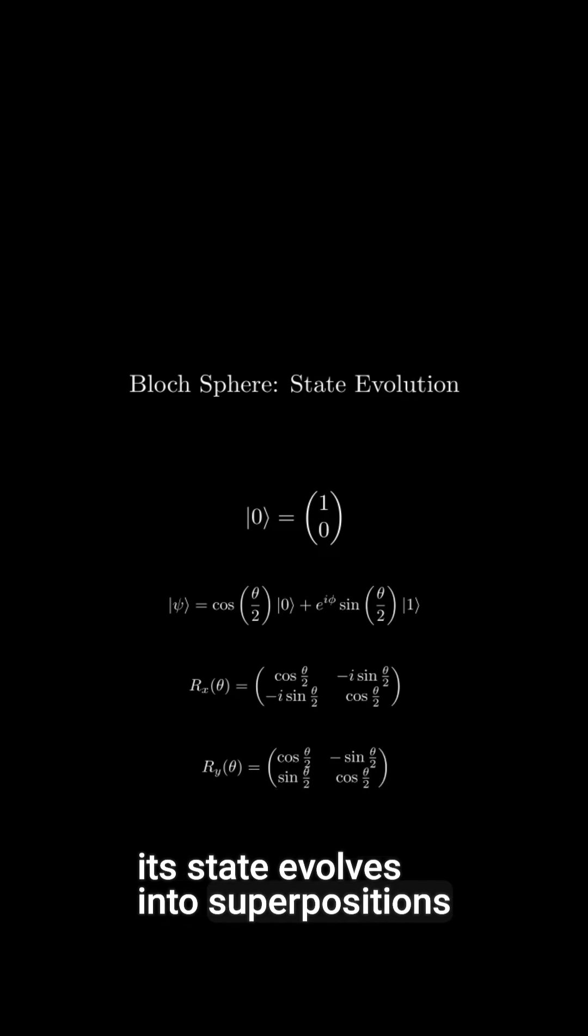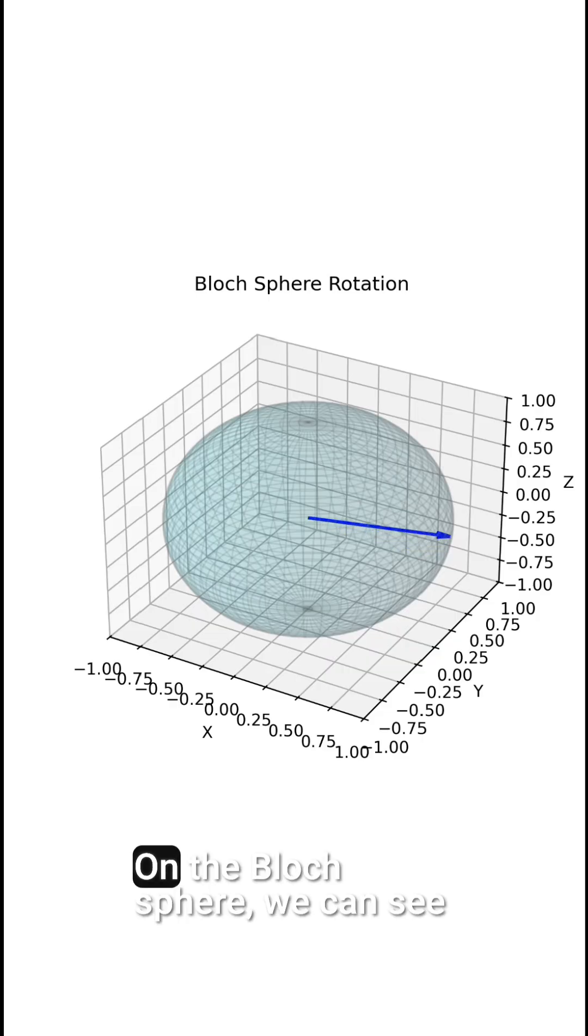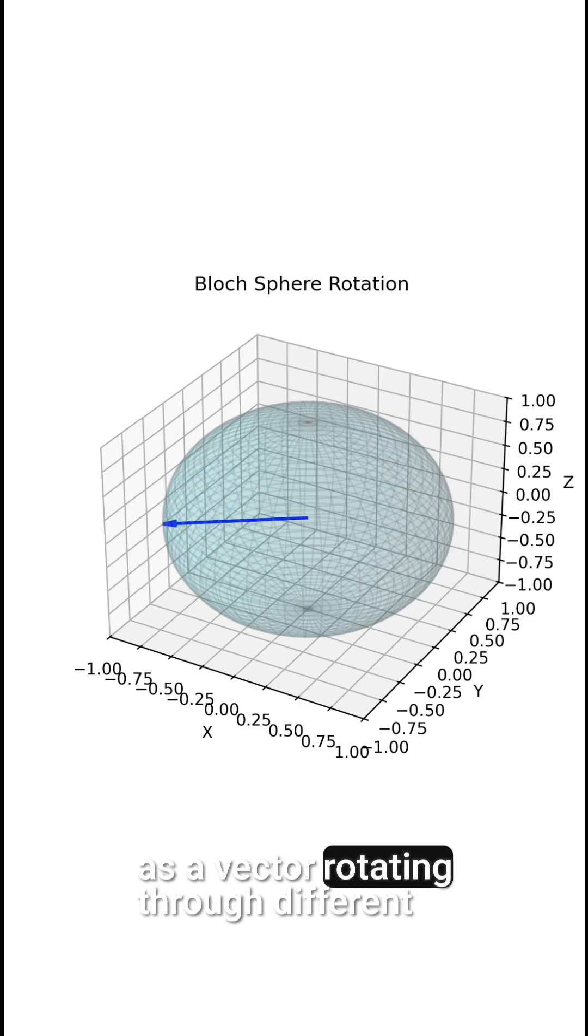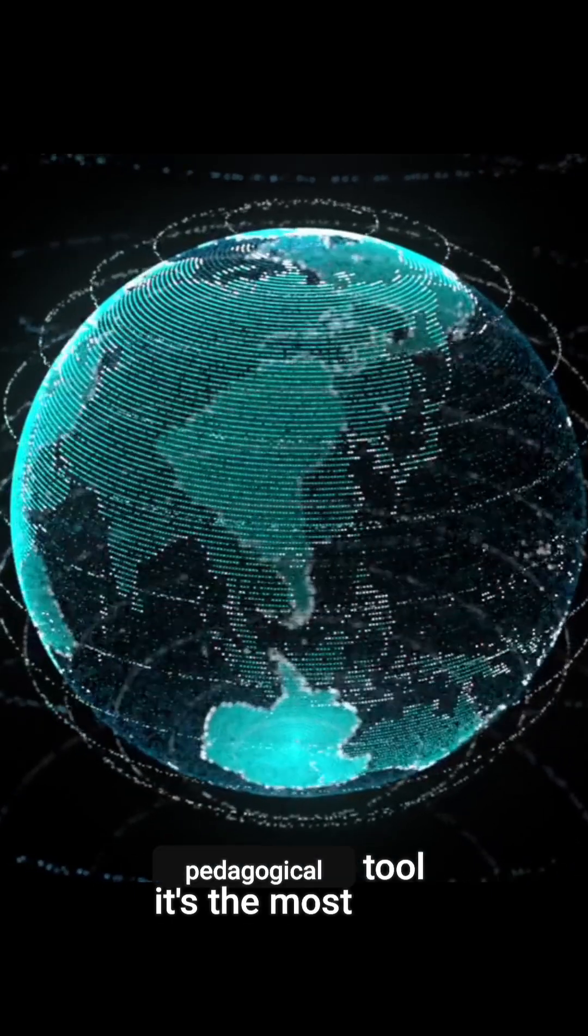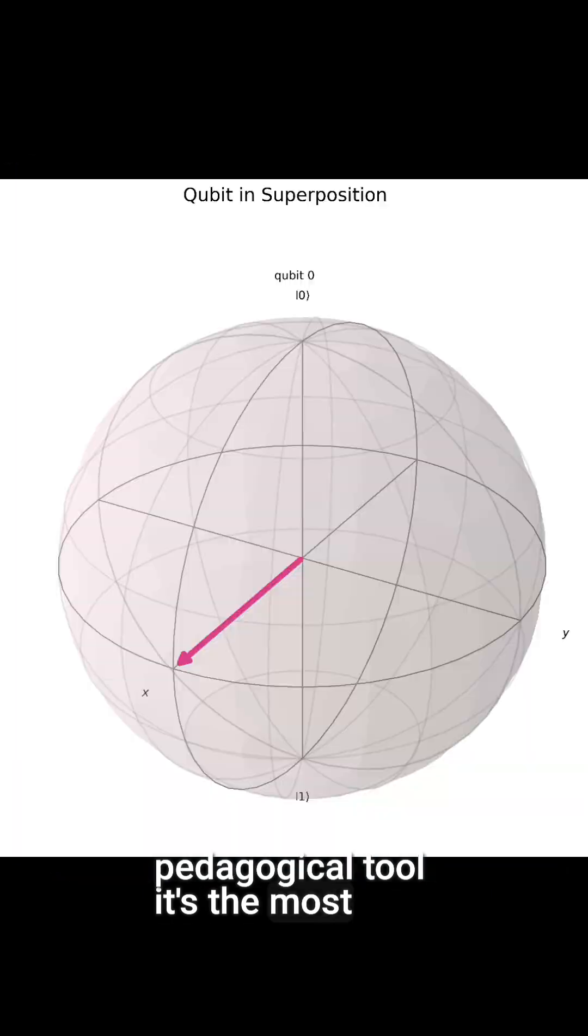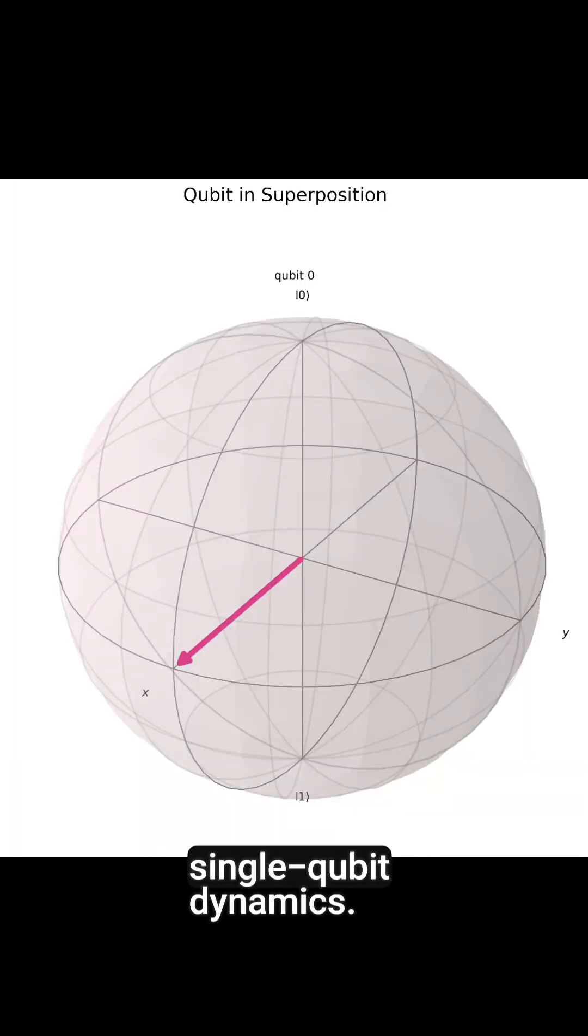its state evolves into superpositions and rotations. On the Bloch sphere, we can see this evolution visualized as a vector rotating through different angles, representing the qubit's quantum state. The Bloch sphere is not just a pedagogical tool, it's the most intuitive way to understand single qubit dynamics.